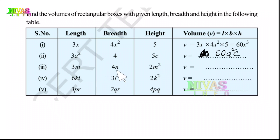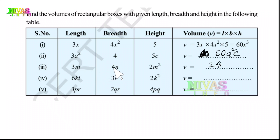Next, coefficient 3 into 4 into 2: 3 into 4 is 12, 12 into 2 is 24. Then M into N into M squared: M into M squared is M cubed, and we have N. So the answer is 24M³N.